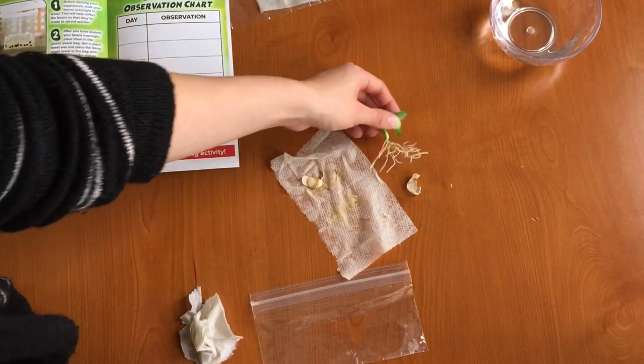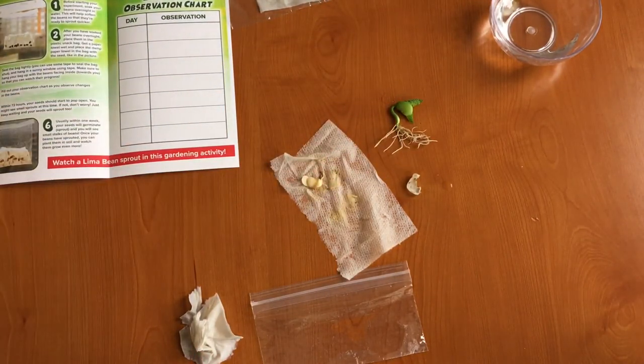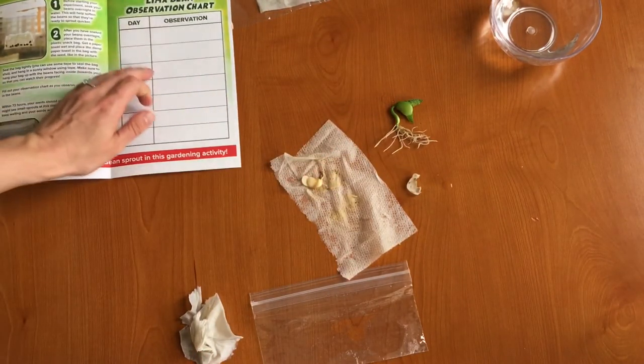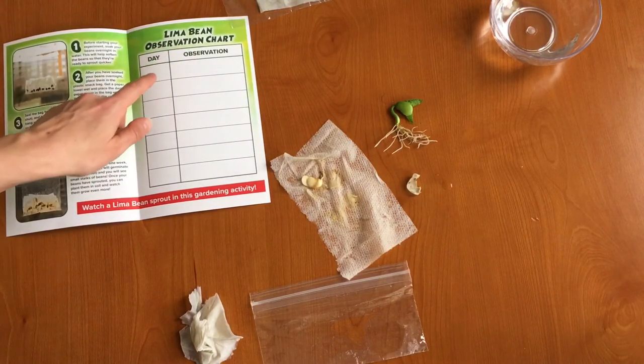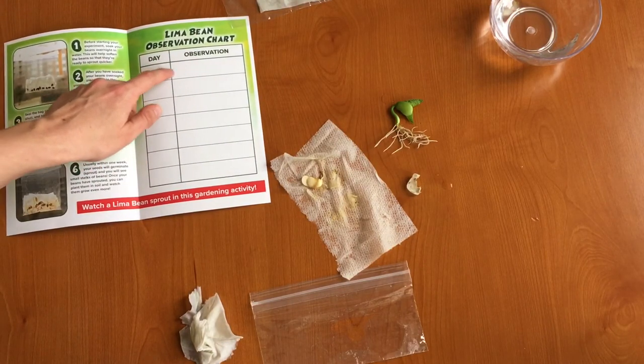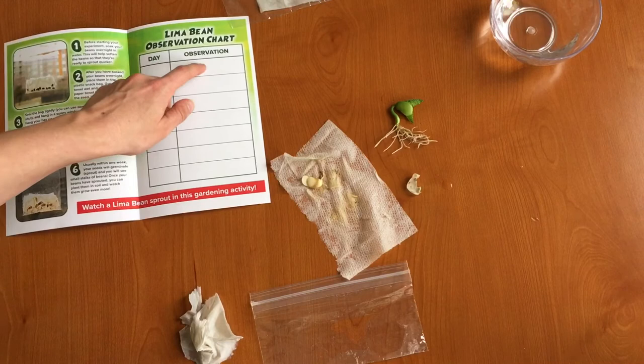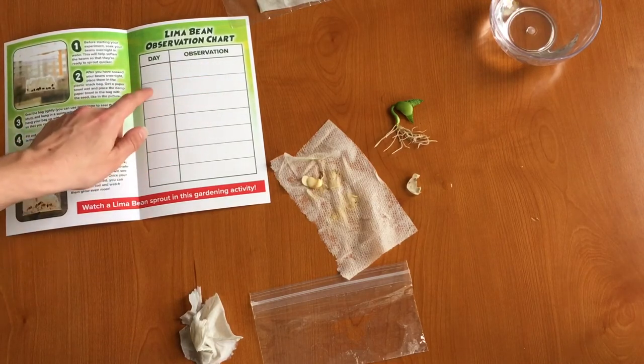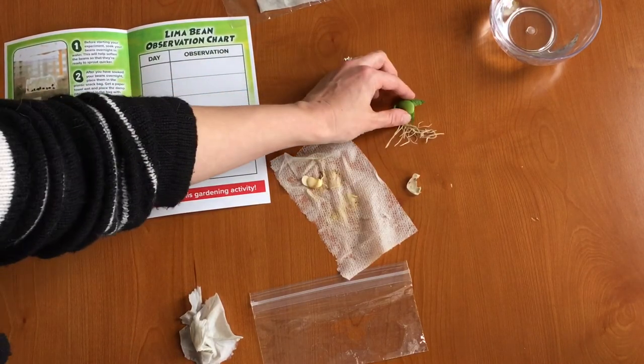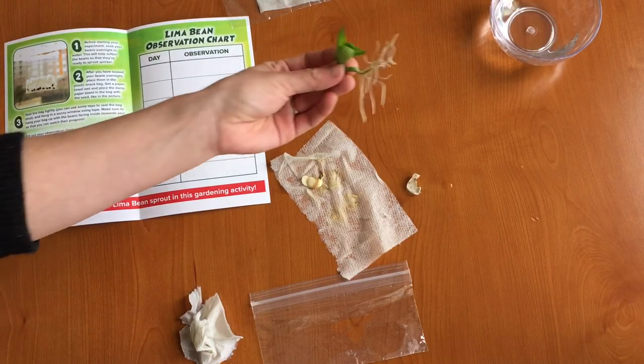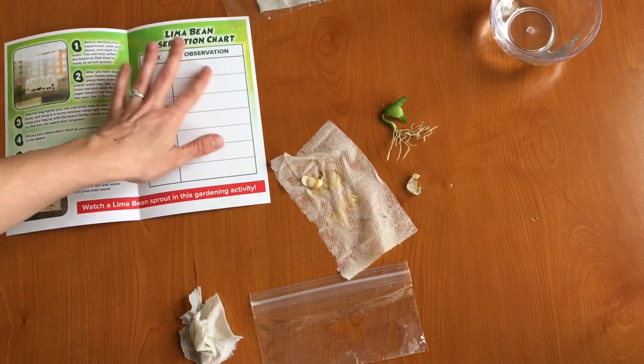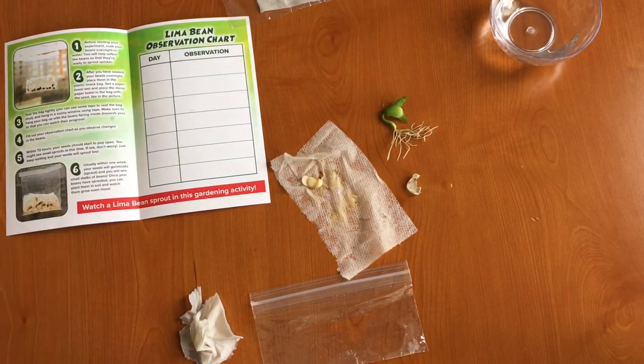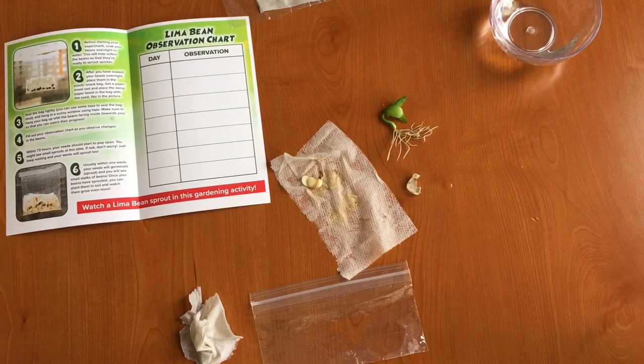Great job guys. Nice work putting your lima beans together. You can make your observations on your lima bean observation chart. So for example on day three I could write that I saw a root coming out. On day seven I saw that there are leaves coming out of the top. Go ahead and write down your observations and share them with us here at the library. We'd love to see what your observations are.